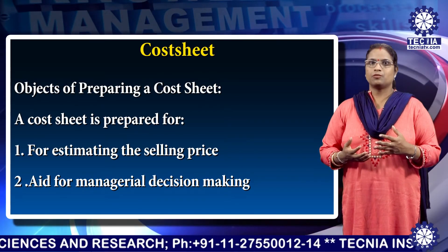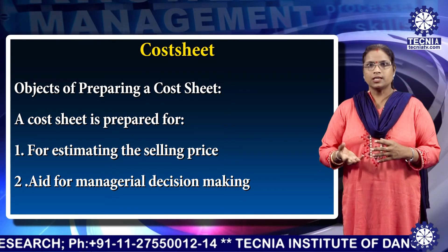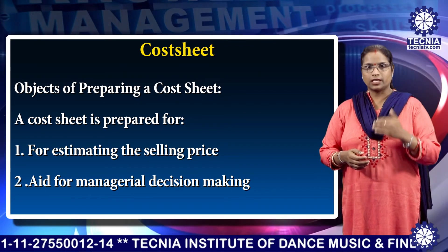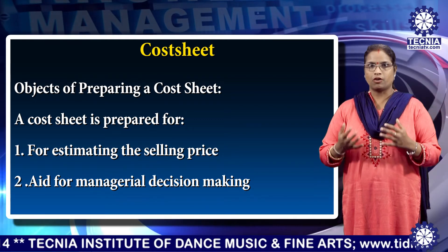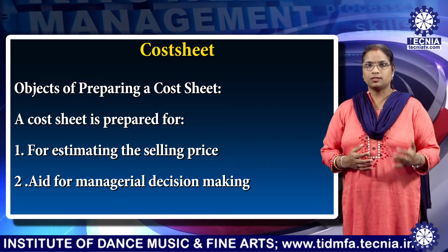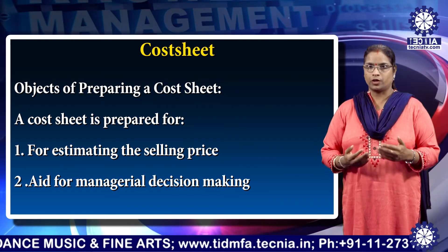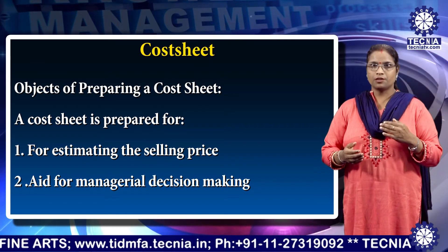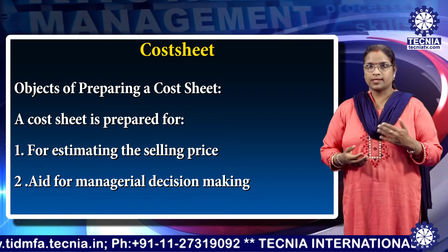A cost sheet is prepared for various objectives. First, for estimating the selling price — a cost sheet helps in estimating the selling price of a product or a service. It ascertains the aggregate as well as the unit cost at each stage of the product and also the total cost of the product. Then a margin of profit is added and the selling price is ascertained.